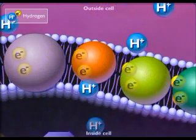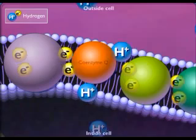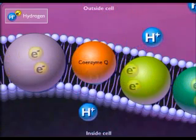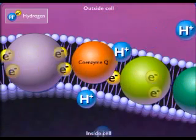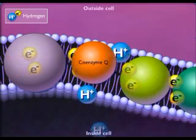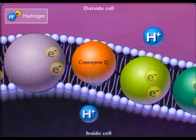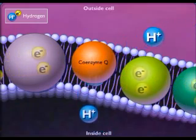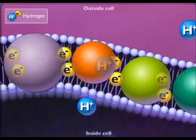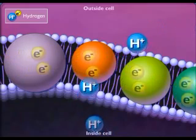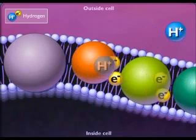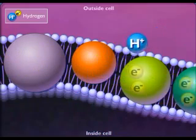Some of the electron carriers, such as coenzyme Q, accept a proton from the inside of the cell membrane as they accept electrons. The proton is then transported through the membrane as electrons move down the chain. This increases the proton gradient across the membrane and enhances the proton motive force.